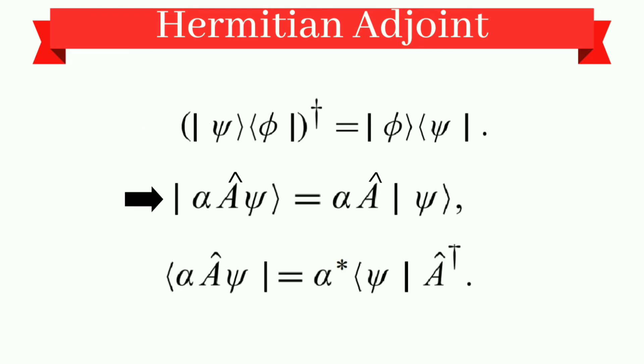So now, the next property is how operators act inside a ket and bra. This is an important one. Let's see. Ket lowercase a times A operator psi equals lowercase a times A operator ket psi. So this is simple.